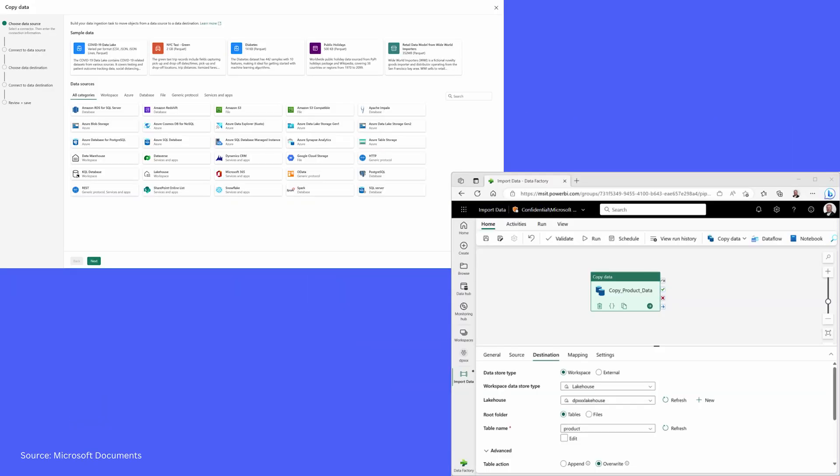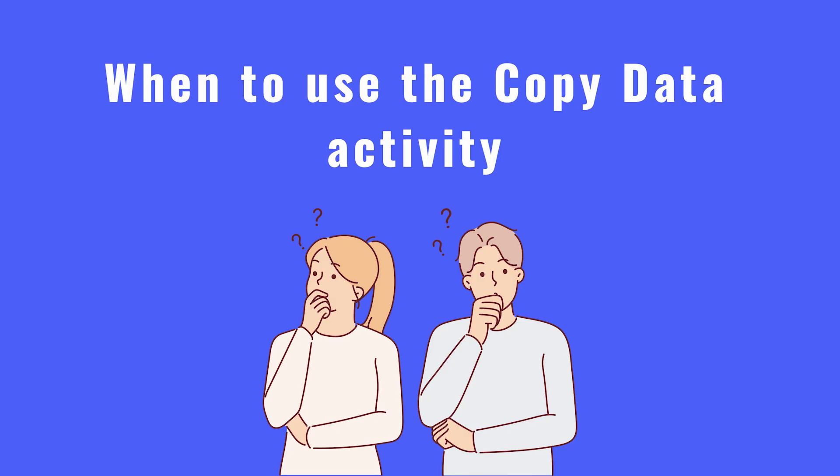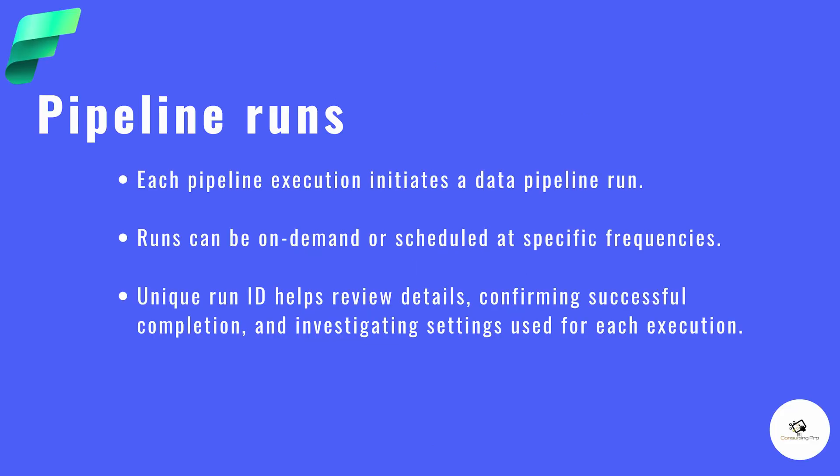The copy data activity is one activity that simply copies data from source to destination — no transformations are performed. If you want transformations, I strongly recommend using either notebooks, or if you're not comfortable with coding, use Data Flows Gen 2 which offers a user interface similar to Power Query. The copy data activity is used when you just need to copy and load data into the destination without any transformation.